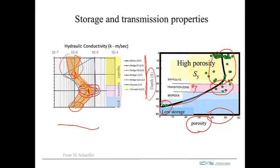The general range of hydraulic conductivity K is 10⁻⁶ to 10⁻⁵ meters per second.